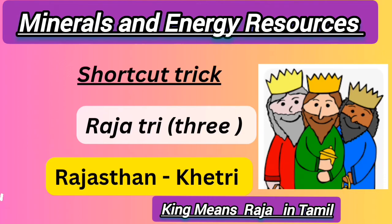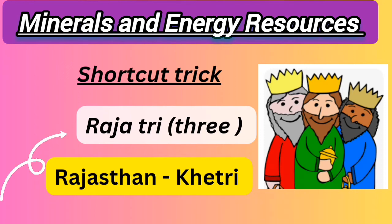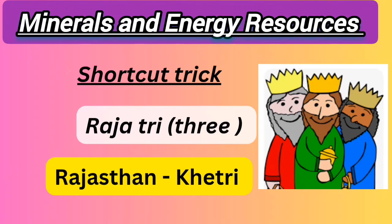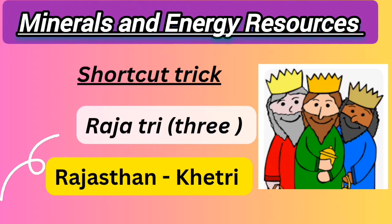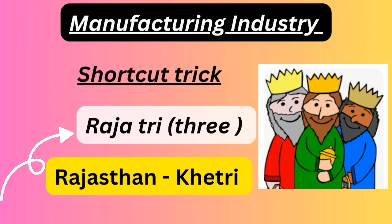The next shortcut is 'raja tri' — 'raja' means king in Tamil, and 'tri' represents three, as in tricolor flag. Raja denotes Rajasthan, and tri represents K3. So Rajasthan is the state and K3 is the mining area for copper ore. Hope you understood all the points.